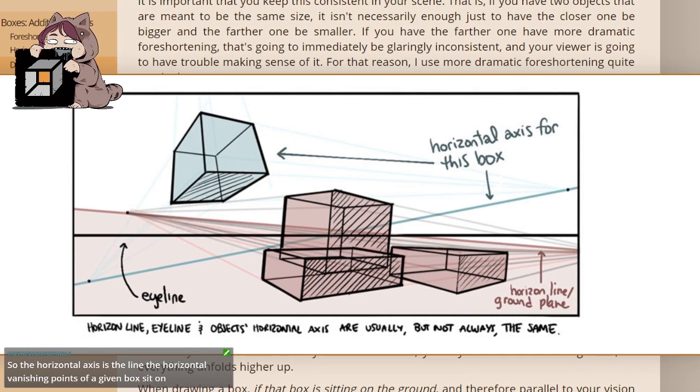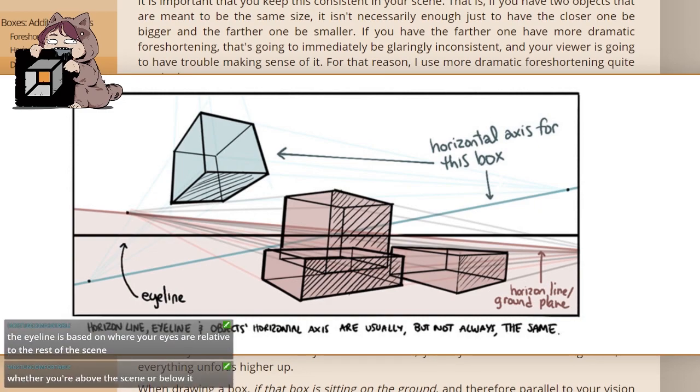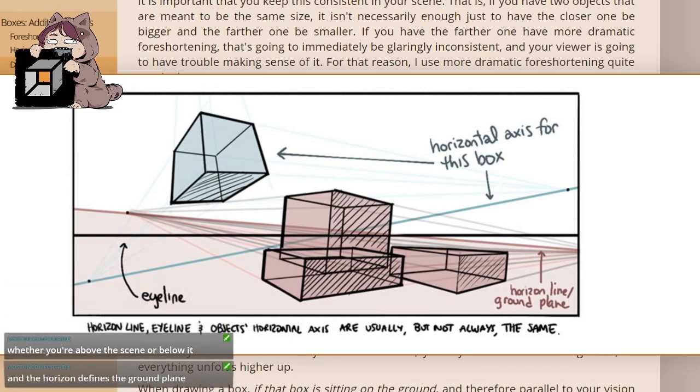The horizontal axis is the line the horizontal vanishing points of a given box sit on. The eye line is based on where your eyes are relative to the rest of the scene, whether you're above the scene or below it. And the horizon defines the ground plane.